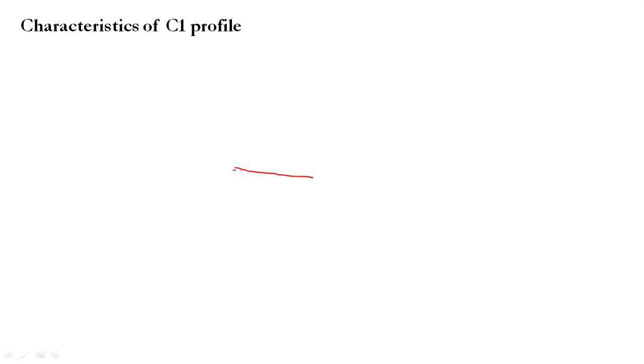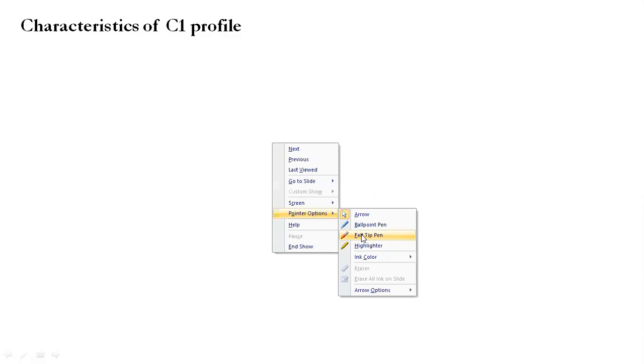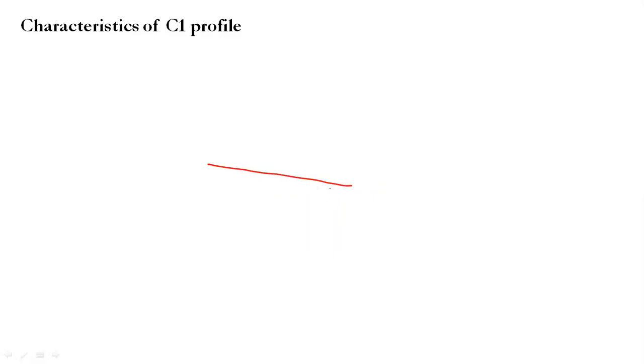A C1 profile or a C3 profile will be found on a critical slope. First, let's draw a critical slope. By critical slope we mean a slope where the bed slope is such that it is exactly equal to the critical slope. This means you already have the critical depth line, which you can draw directly — it denotes YC.